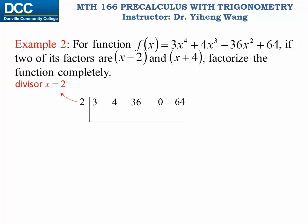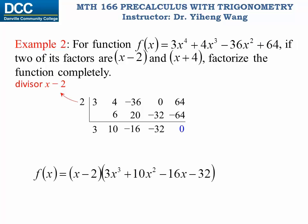When we divide this function by the first factor x minus two, that factor indicates a zero of x equals to two, and that goes here. We write down the first coefficient three, multiplied by the zero which is two: three times two equals six. Four plus six is ten; ten times two is twenty. Negative thirty-six plus twenty is negative sixteen; multiply by two again, negative thirty-two. Zero plus negative thirty-two is still negative thirty-two; multiply by two again, negative sixty-four. Sixty-four plus negative sixty-four gives a remainder of zero, indicating exact division. This tells us the original function equals x minus two multiplied by the quotient: three x cubed plus ten x squared minus sixteen x minus thirty-two.